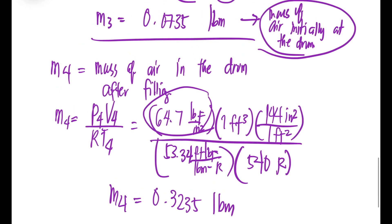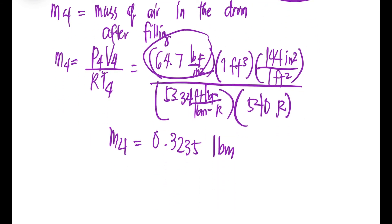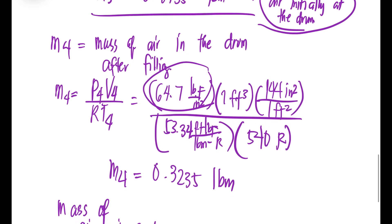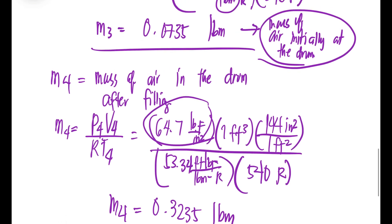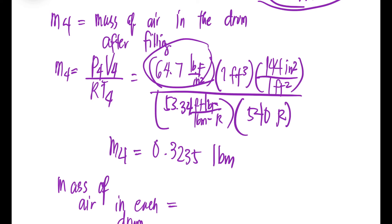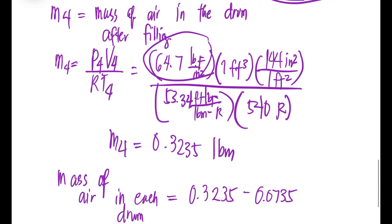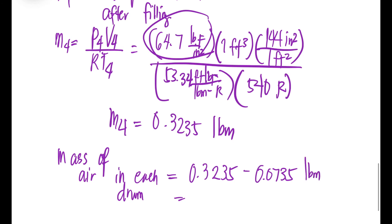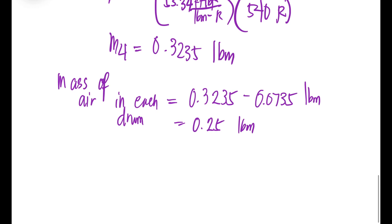So we have the initial mass of air in each drum and the mass of air in the drum after filling. The net mass of air added to each drum is: 0.3235 minus 0.0735 equals 0.25 lbm per drum. This is the mass of air each drum receives.